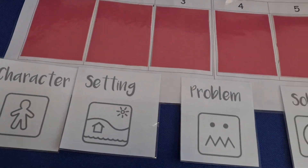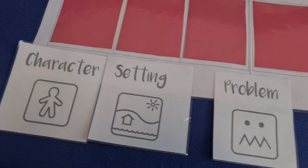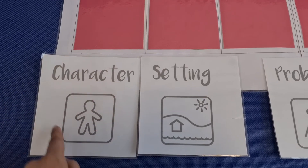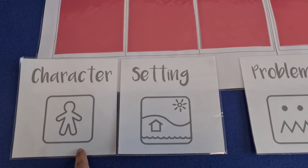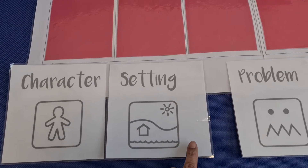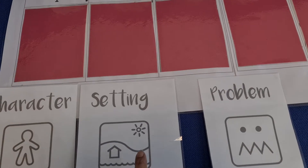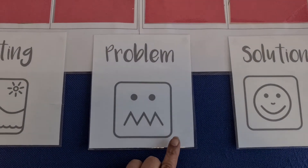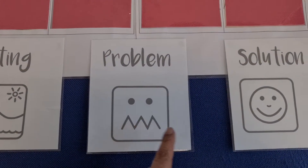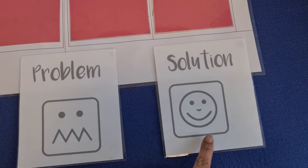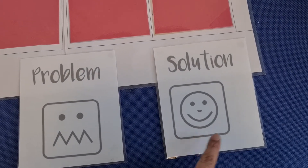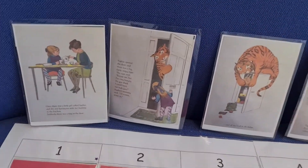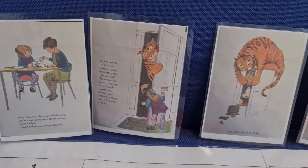Here is our Tales Toolkit reminders. We have our picture for our character, our picture for our setting, a picture for a problem, and a picture for our solution. And here is our story about the Tiger Who Came to Tea.